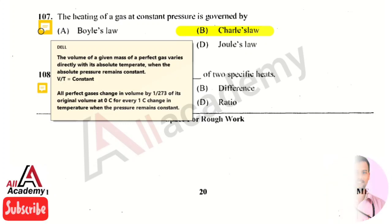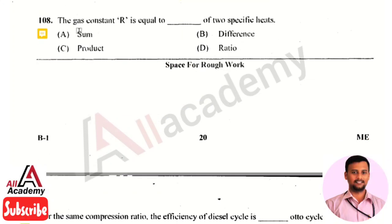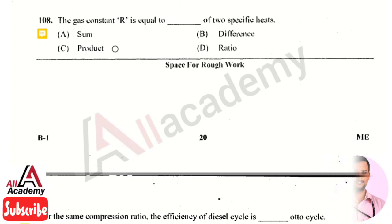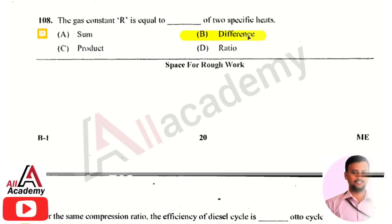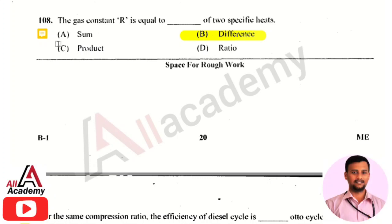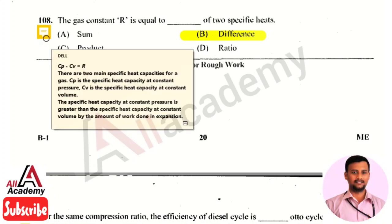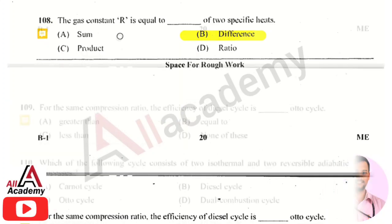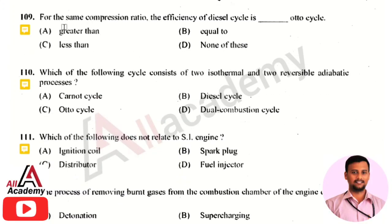The next question: the gas constant R is equal to the difference of two specific heats. The two specific heats are the specific heat at constant volume (Cv) and the specific heat at constant pressure (Cp). Therefore, Cp minus Cv equals R, the gas constant.